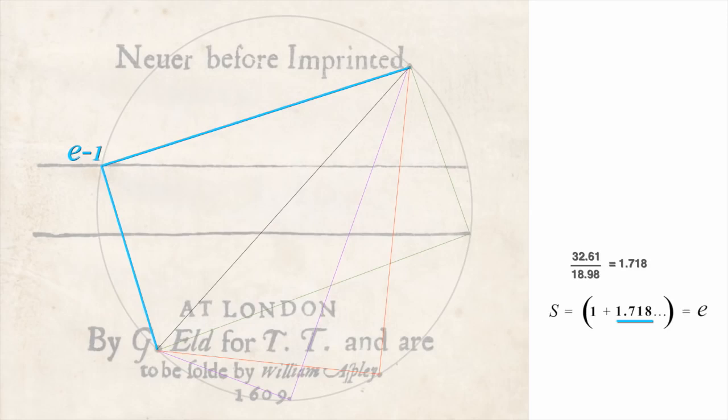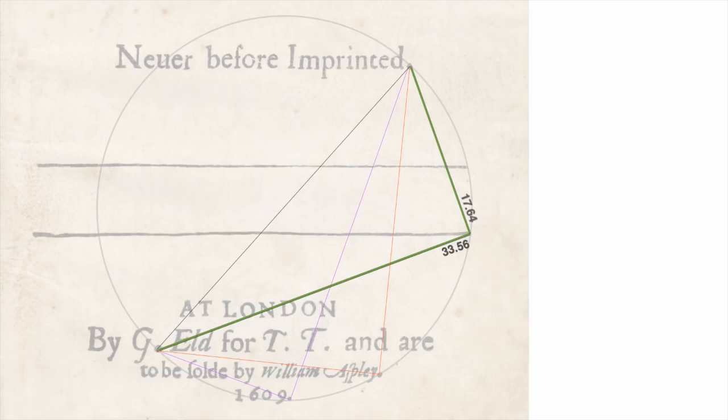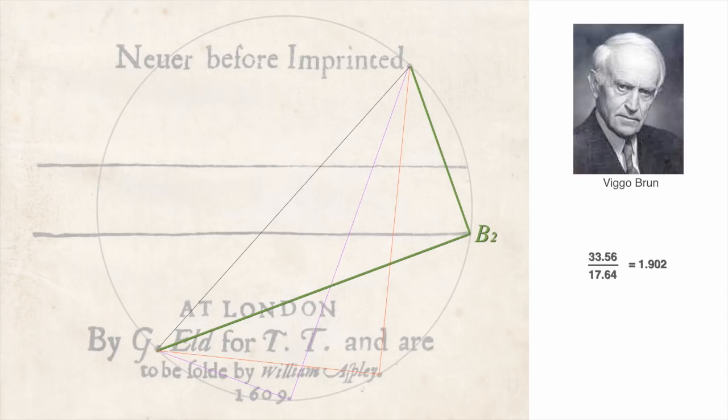Here, we have a constant that's pretty much unknown to the mainstream, 1.902. It's called Brun's constant, or B2. It concerns a unique category of prime numbers called twin primes. Enormously important in encryption and internet security. But here again, this important constant wasn't known until 1919. And yet there it is.